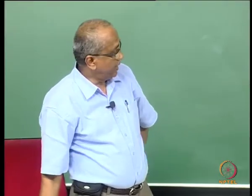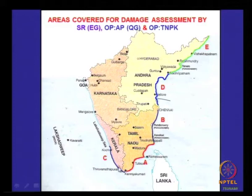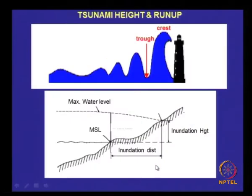During the tsunami, the affected parts very badly affected were the ones shown here in blue color. All these places were affected, and some areas were a bit affected, but not much. This area was really not affected much because it is in the shadow area of Sri Lanka.